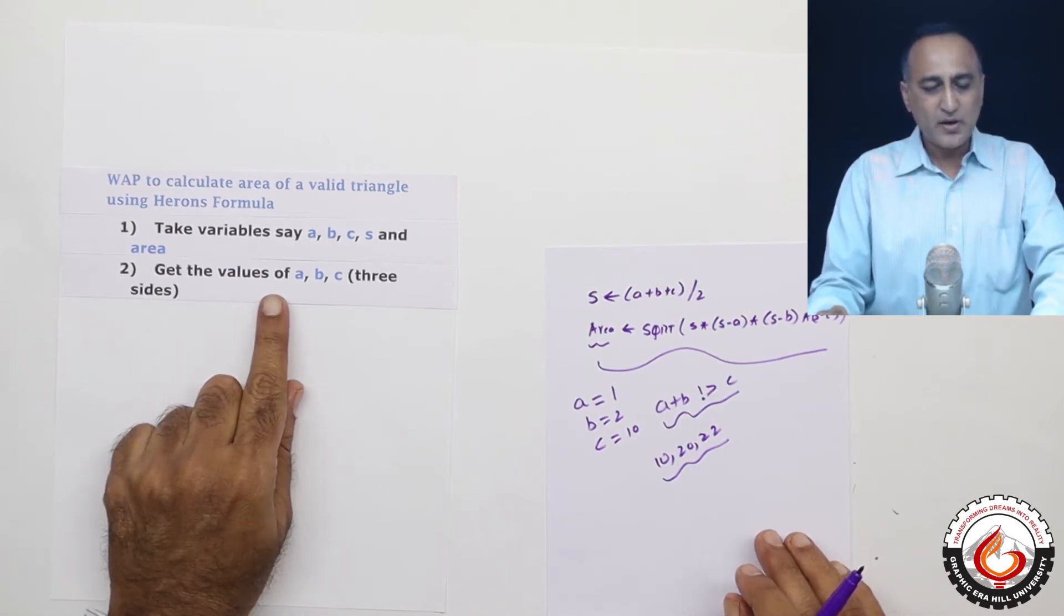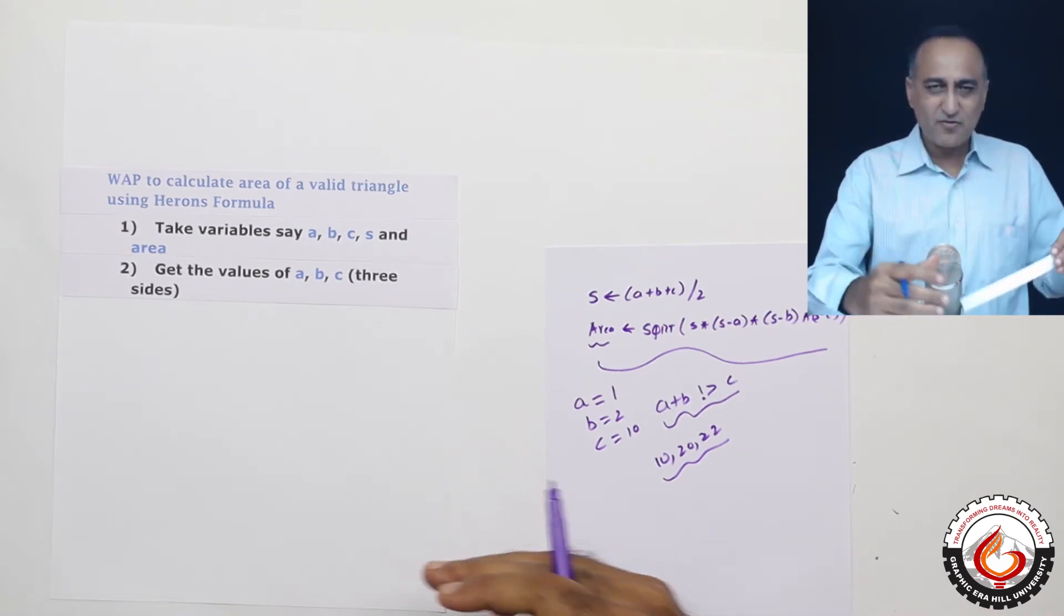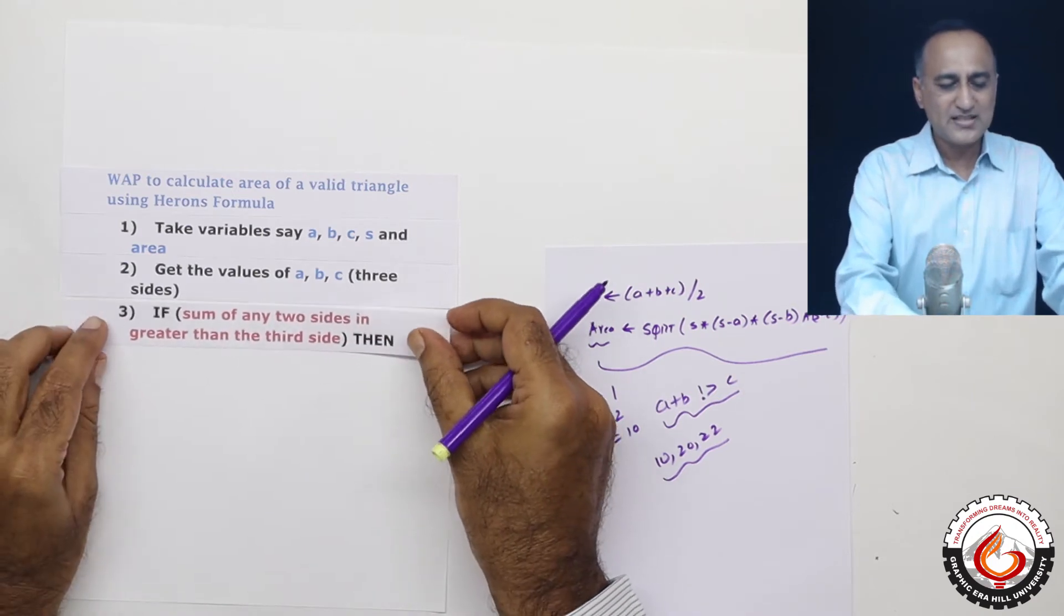So I'm going to read in the values of A, B and C. Now in order to determine whether it's a valid triangle, I'm just giving you the high level logic.